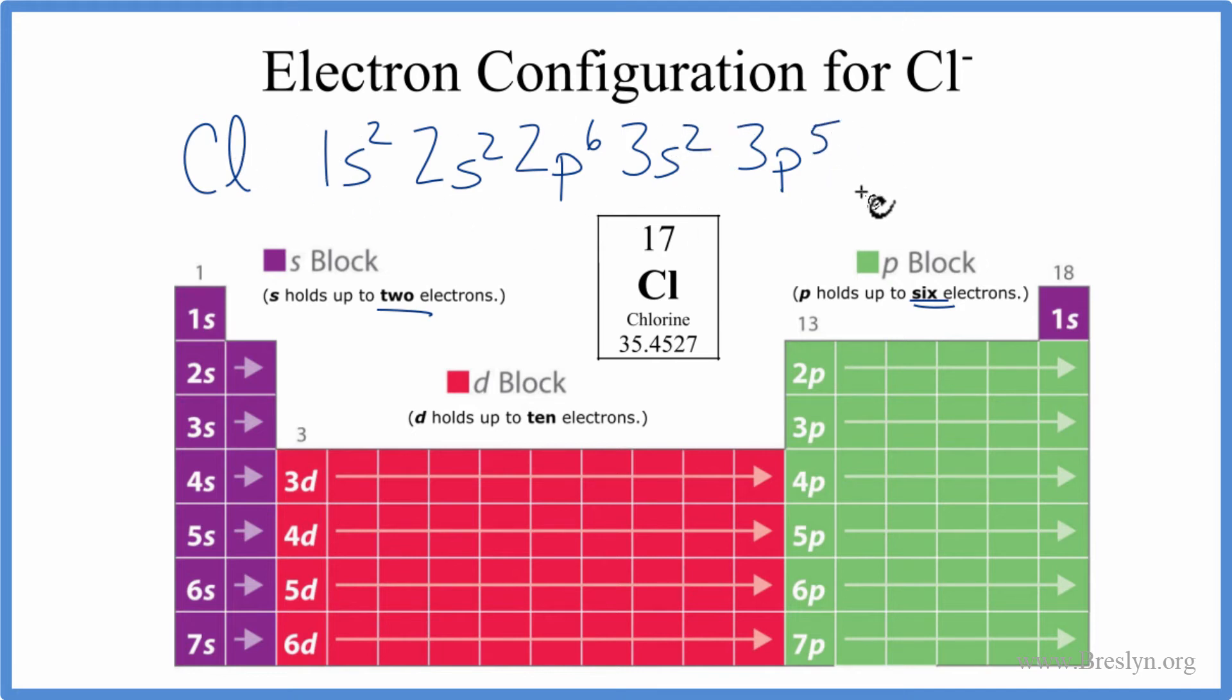That all adds up to 17, and that's the electron configuration for neutral chlorine. But we wanted the chloride ion, Cl minus. So when we have a negative up here, like with this ion, that negative means we've gained an electron.